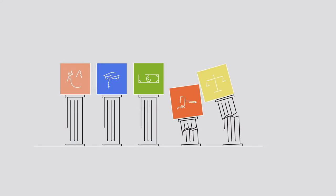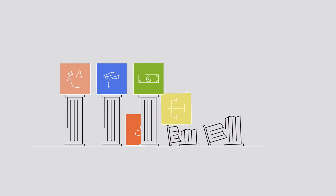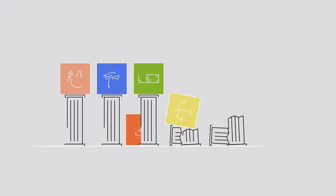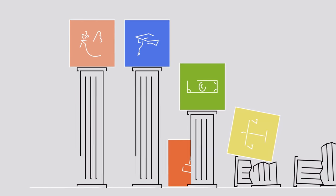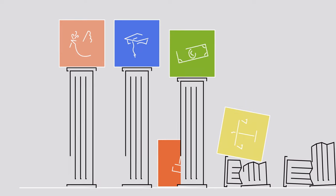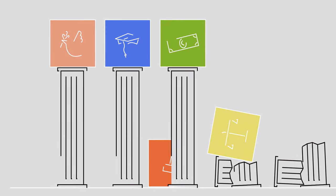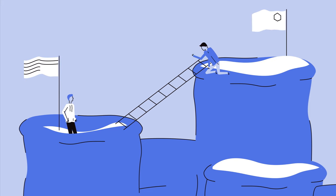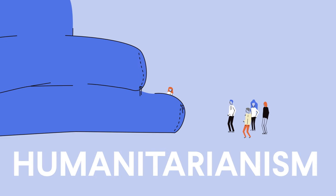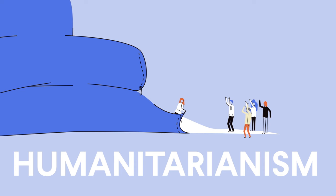Many countries struggle to achieve these five preconditions for economic growth, but other countries frequently offer to step in and help by hosting peace negotiations, funding and supporting education programs, and offering cheap loans for infrastructure projects. But why would one country care about helping another country grow economically? Well, there are several reasons. Some governments value humanitarianism and simply view it as the right thing to do. We should all try to help our fellow humans, no matter where they live.